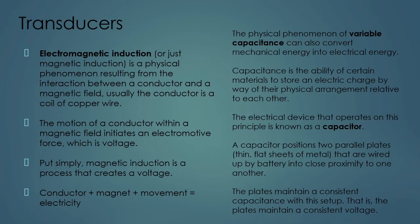The physical phenomenon of variable capacitance can also convert mechanical energy into electrical energy. Capacitance is the ability of certain materials to store an electrical charge by way of their physical arrangement relative to each other. The electrical device that operates on this principle is known as a capacitor. A capacitor positions two parallel plates — thin, flat, metallic sheets — wired up with a battery and placed in close proximity to one another. The plates maintain a static voltage. If you have a fixed plate and one that can move, the moving one varies the capacitance of the system and initiates a voltage.